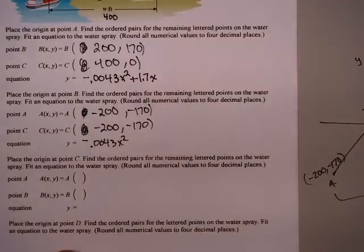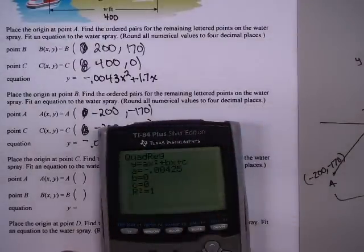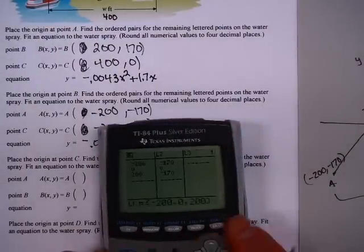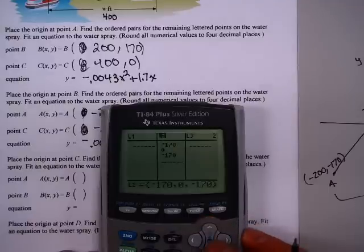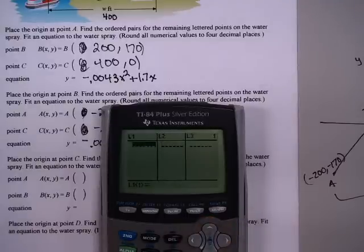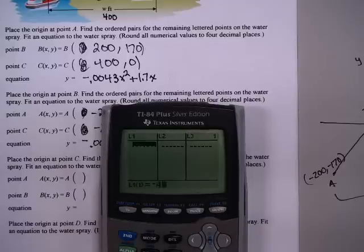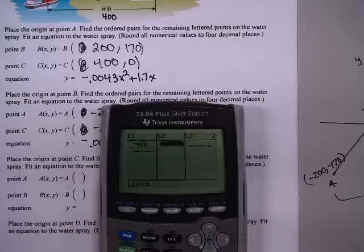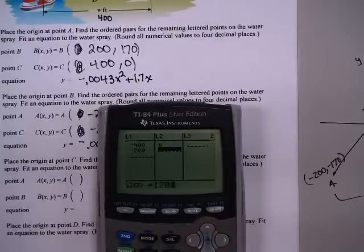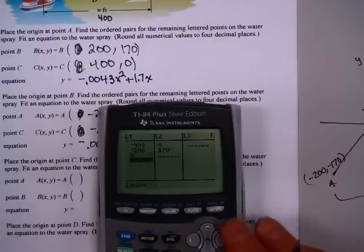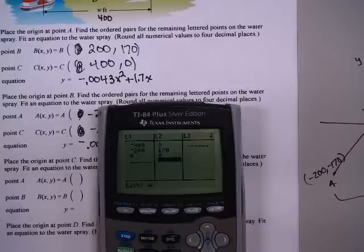Let's go to the calculator. I hit stat, edit. Let's clear our lists again. All the way up to the top, using the arrow keys, clear, enter. All the way up to the top, using the arrow keys, clear, enter. Then, let's put these in. My points were minus 400 and zero. Minus 200 and 170, and zero and zero.